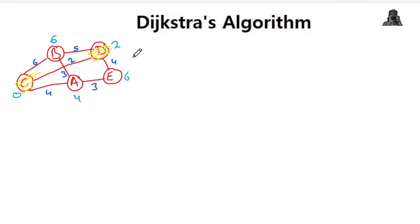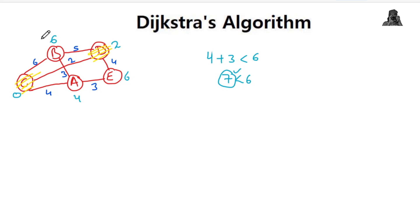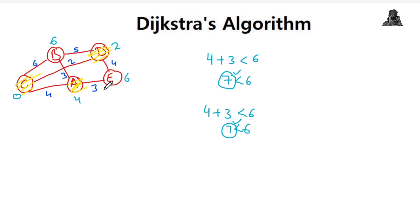Remaining unvisited vertices are B=6, A=4, and E=6. The lowest value is 4, so vertex A is selected. Adjacent vertices from A are B and E. Checking B: distance of A (4) plus cost of reaching B from A is 3, giving 7, which is greater than 6 — no update. Checking E: distance of A (4) plus cost of reaching E from A is 3, giving 7, which is greater than 6 — no update. A is now visited.